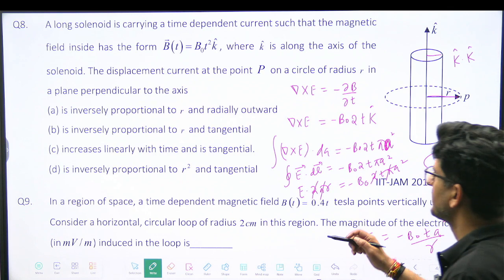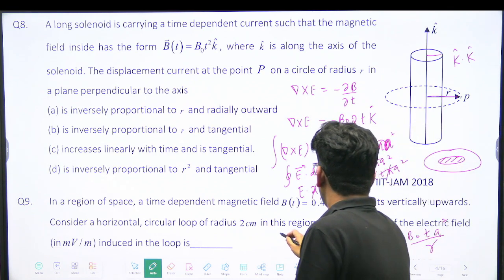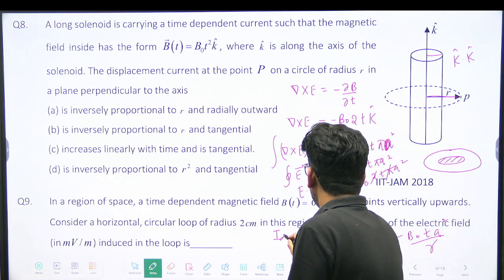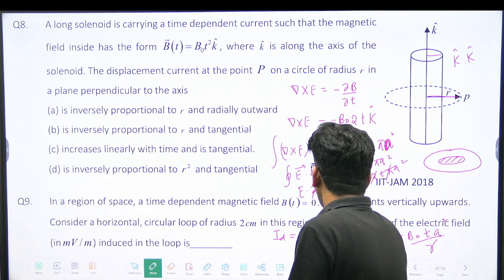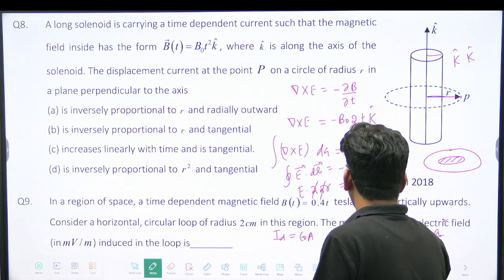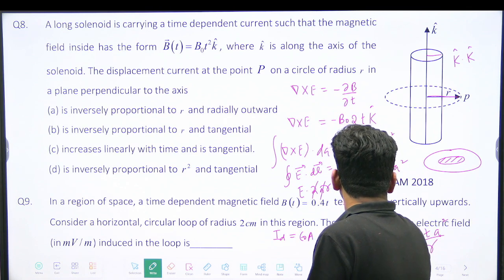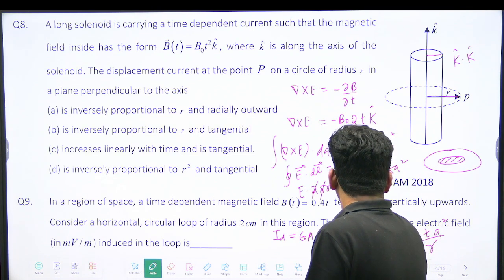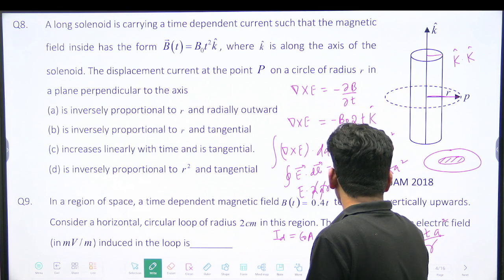Now what is JD? What is ID? ID is equal to epsilon naught times the area, and into... So just T will be gone.